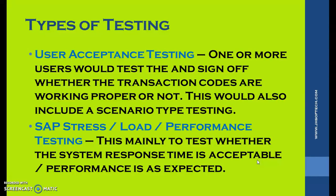User acceptance testing (UAT) involves one or more users testing and signing off whether the transaction codes are working properly. As the name indicates, UAT is done by the end users from the client side. They approve whether all the required elements are working properly, and this also includes scenario-type testing.